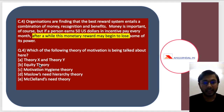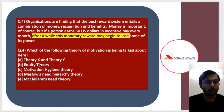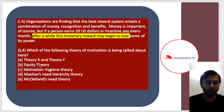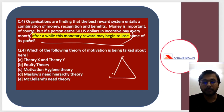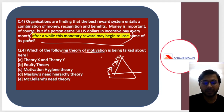The next case study states: organizations find that the best reward systems entail a combination of money, recognition, and benefits. Money is important, but if a person earns $50 in incentive pay every month, after a while this monetary reward may begin to lose some of its power. The key insight here is that we are moving from one motivation factor to another. The question asks which theory of motivation is being discussed — answer in the comments before I reveal it.